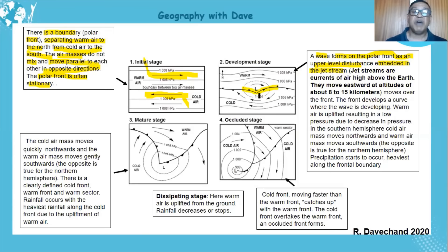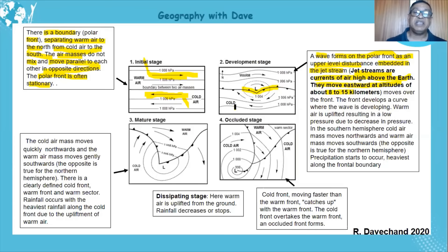Jet streams are air currents high above the earth, found at altitudes of 8 to 15 kilometers, moving eastwards. As they move, they create a disturbance over the polar front. The front develops a curve — a bend — and the wave develops.